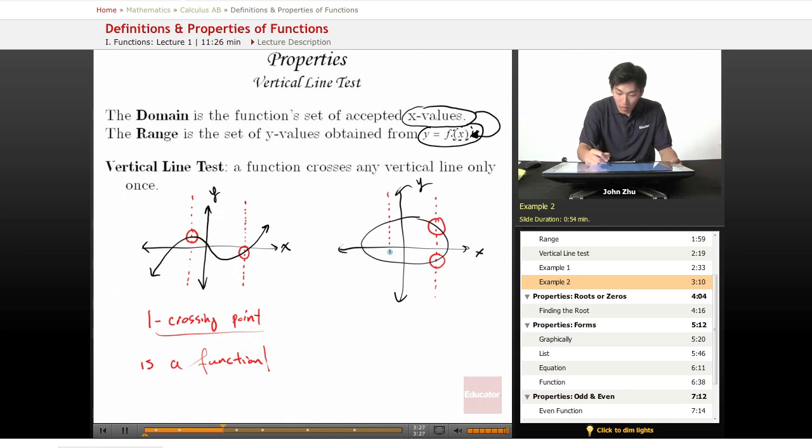And if we draw one here, we also have two crossing points. Now be careful, if we draw one here, we will have one crossing point, but simply because we have one crossing point doesn't mean that the entire graph is a function.